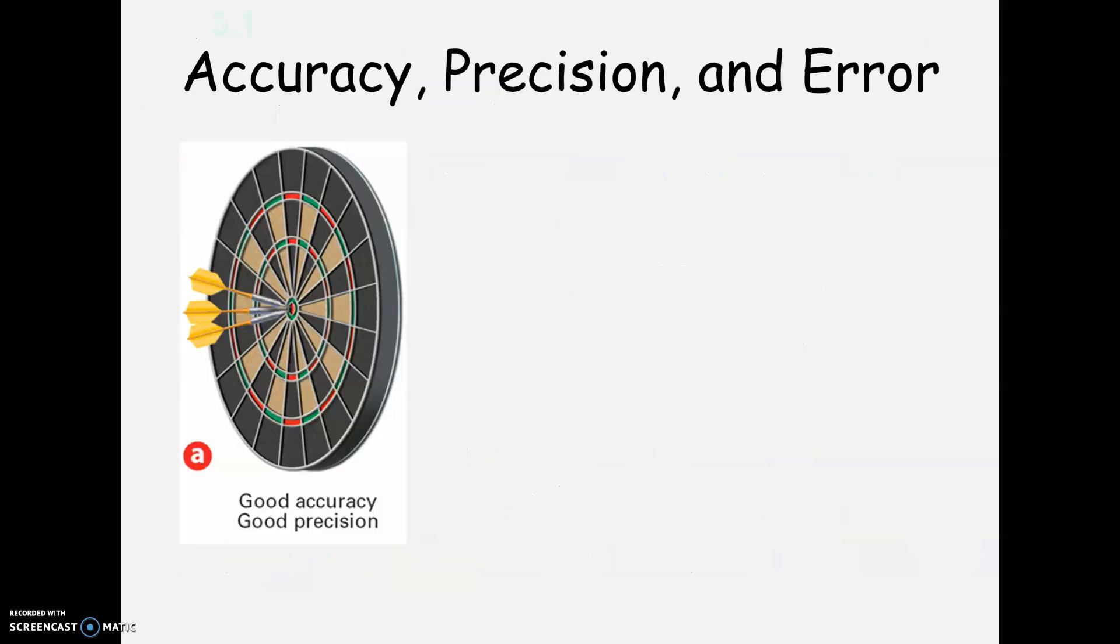I think this dartboard is a very good analogy of it. So this would be good accuracy and good precision. It's good accuracy because if you were aiming specifically for the bullseye, you hit the bullseye. So you were accurate. But it's also good precision because all three of your darts hit in the same location.